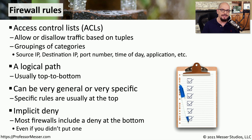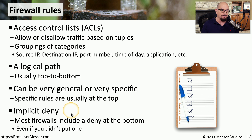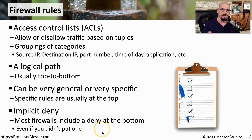If we go through this entire list of rules on the firewall and have no matches to the data flow, you'll find that most firewalls are configured with an implicit deny — which means once you get to the bottom of the rule base and nothing matches, none of that data is allowed through the firewall by default.